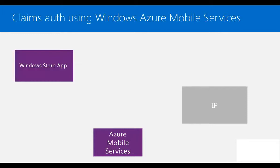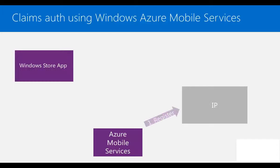Let's start with Windows Azure Mobile Services. Before we can start using it for authentication, we need to do some groundwork. Azure Mobile Services can interact with online identity providers like Microsoft, Facebook, Google, and Twitter. We need to register our application with all the identity providers we want to use. At the end of registration, we receive an ID and a secret for our application, which we fill into the Windows Azure Mobile Services portal.